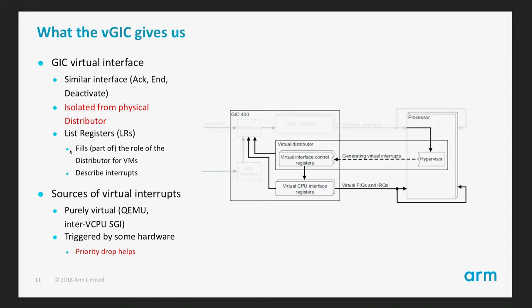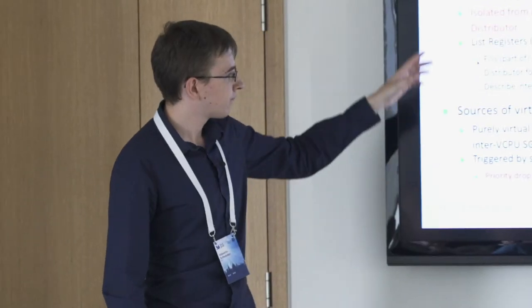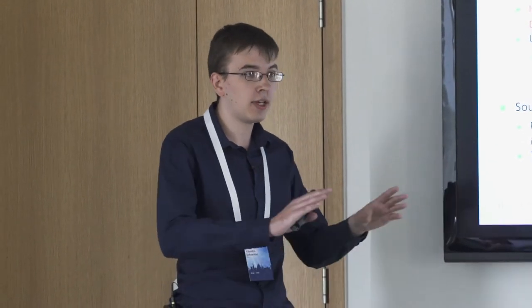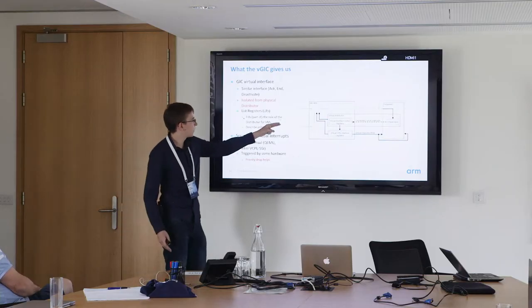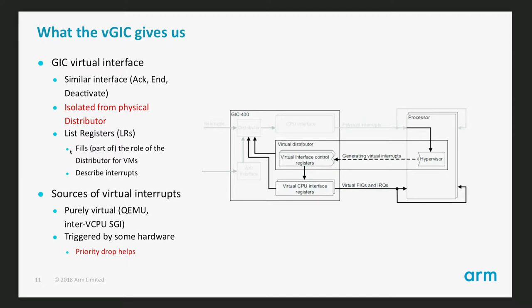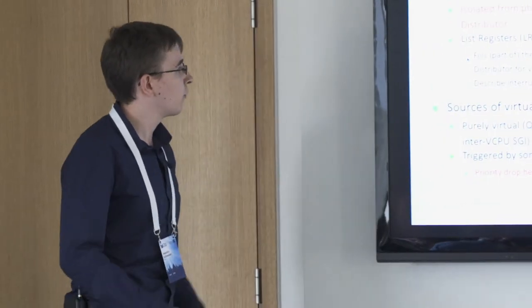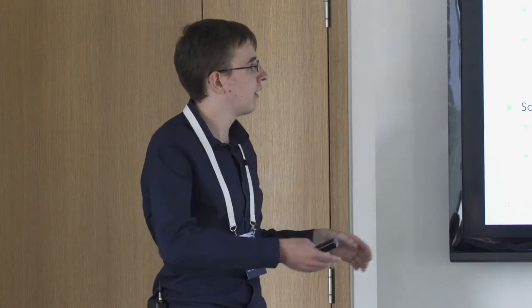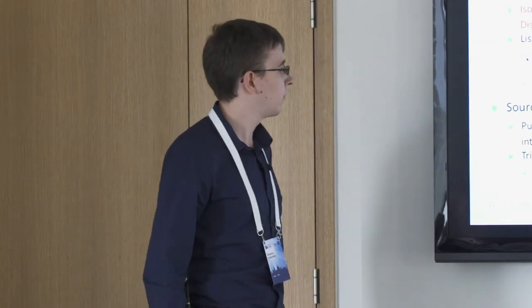The GIC has virtualization extensions to speed things up. The virtual GIC gives us a virtual distributor that the hypervisor can entirely control via registers called list registers. The hypervisor sets up those list registers and then the guest interacts with virtual CPU interface registers — real hardware registers that interact with the list registers instead of the physical distributor. This gives isolation from the physical distributor while still having hardware to speed up virtual machine operations.